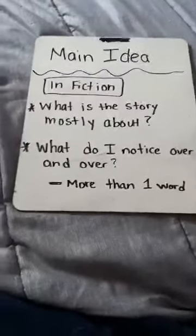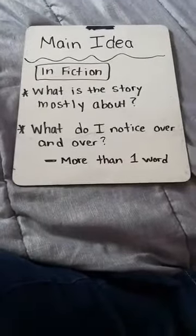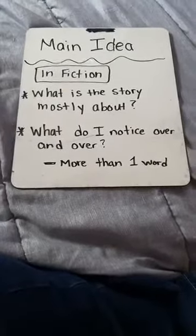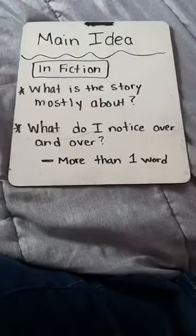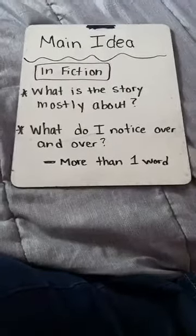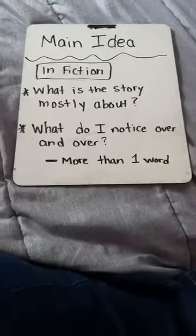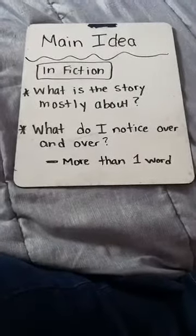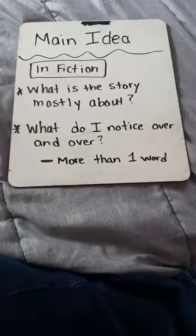Today there are two types: fiction and non-fiction. Today we're going to talk about main idea in fiction. So think about when you're reading a fiction story — what is the story mostly about? And what do you notice over and over again? What is the author saying? What are they doing? It might be more than one word, so keep that in mind. In a fiction story, keep these two things in mind: what is the story mostly about, and what do you notice over and over again?